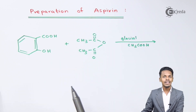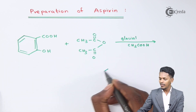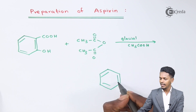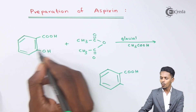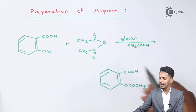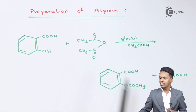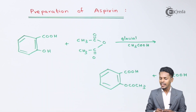This is the acetylization of salicylic acid. In the product, the COOH group remains as it is, while the OH group is turned into OCOCH₃. The rest forms a byproduct in the form of CH₃COOH, that is acetic acid. This product that we have obtained is nothing but aspirin.